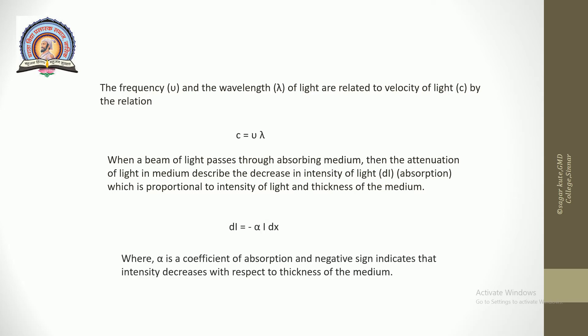dI = -α·I·dx, where α is the coefficient of absorption and the negative sign indicates that the intensity decreases with respect to thickness of medium. Therefore, dI/I = -α·dx.